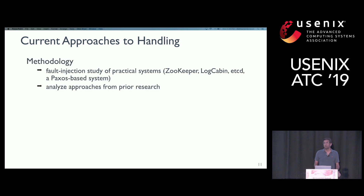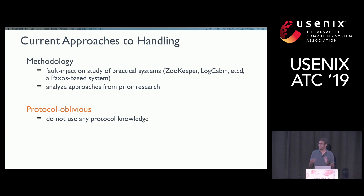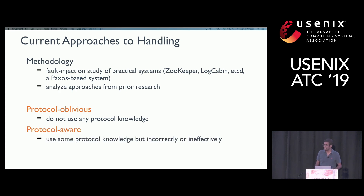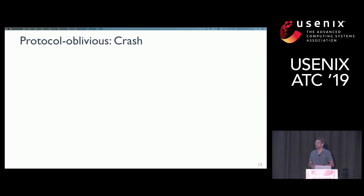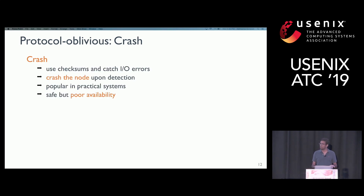Now let's talk about current approaches to handling storage faults. We take practical RSM systems, inject faults, and observe their behavior. We also analyze approaches proposed by prior research. We classify these into two categories: protocol-oblivious approaches, which do not use any protocol-level knowledge and thus can lose data or become unavailable; and approaches that use some protocol-level knowledge but do so ineffectively or incorrectly, still leading to safety violations and unavailability. The first approach I'll describe is called 'crash': the node uses checksums and handles I/Os carefully, but upon detection it crashes itself. This is used by Zookeeper. By crashing, you avoid inflicting harm but affect availability. In a five-node cluster already operating at bare majority, a single data corruption causing one node to crash leads to unavailability.